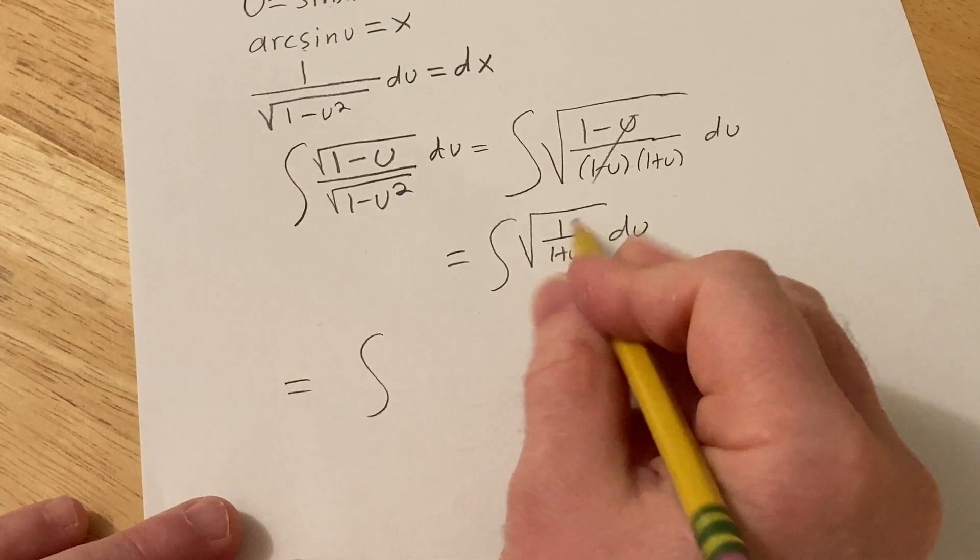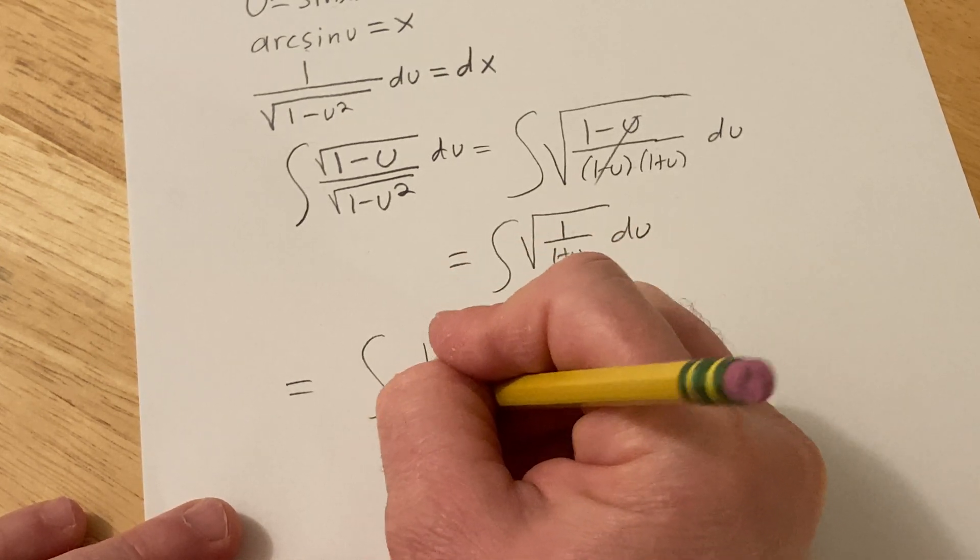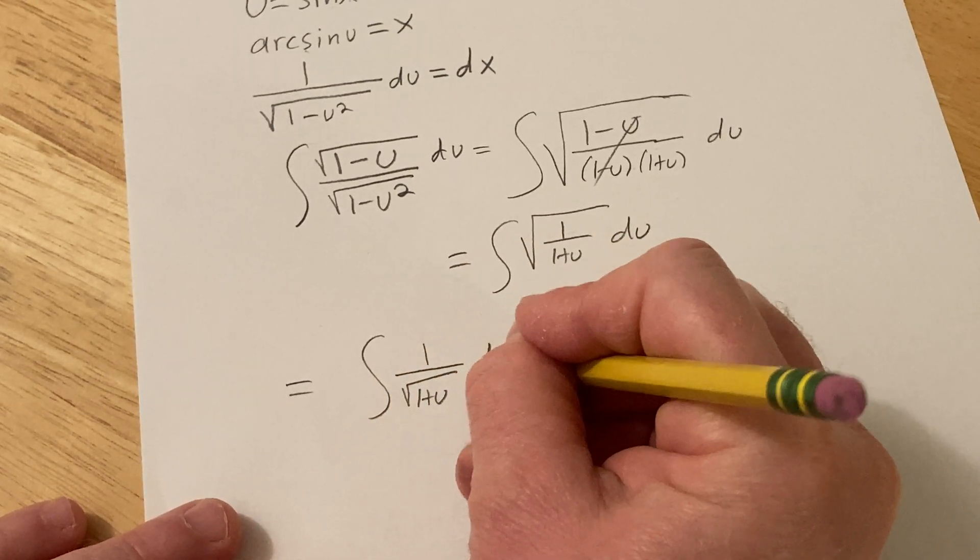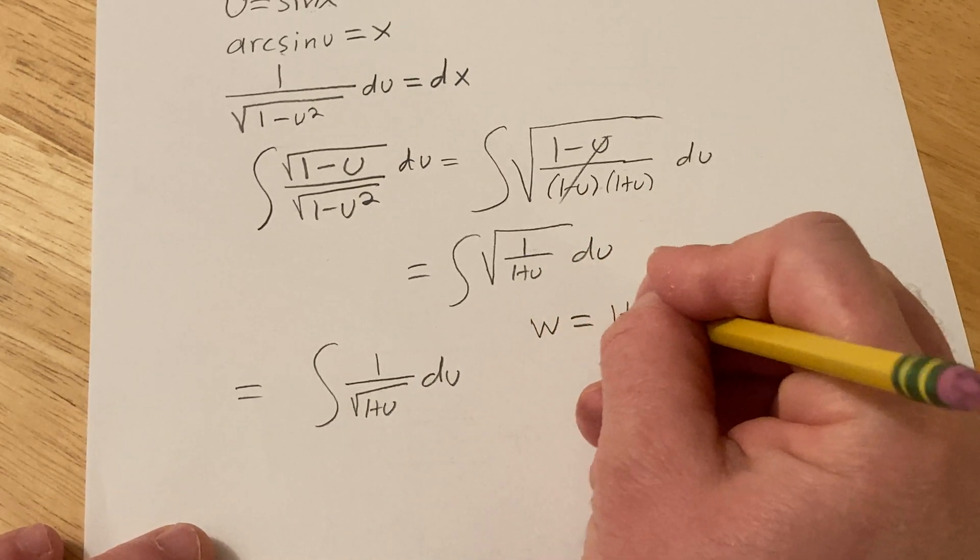And this is equal to, square root of 1 is 1, so it's 1 over this root here like this. And this is a pretty easy integral, we can make a substitution here, we can let w equal 1 plus u,